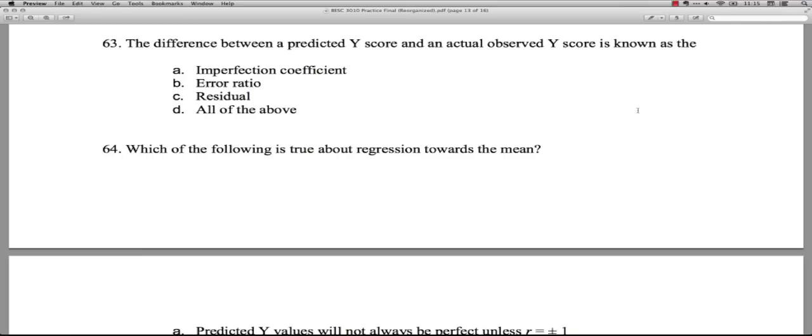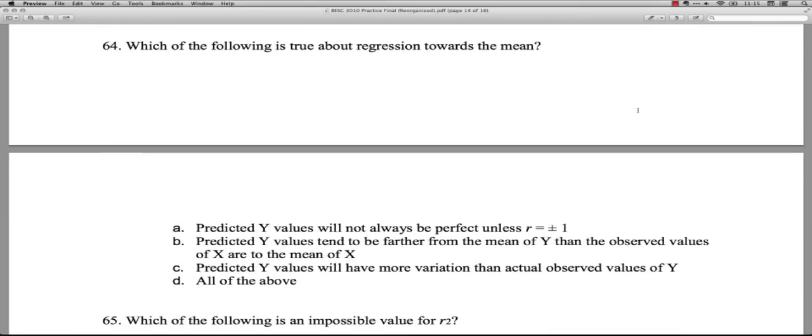Question 64: Which of the following is true about regression towards the mean? This is a situation that says that when people have really extreme scores on one variable or measured at one point in time, their scores are almost always less extreme on another variable or at another point in time. So things tend to regress or return towards the mean values. They move away from the extremes and back towards the mean, and that's usually the case.